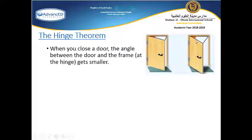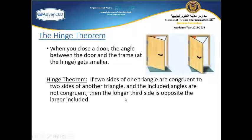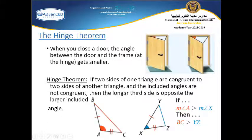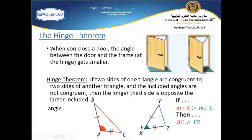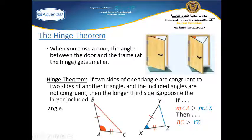Here we have the hinge theorem: if two sides of one triangle are congruent to two sides of another triangle — like side AC congruent to side XZ and side AB congruent to side XY — and the included angles are not congruent, then the longer third side BC is opposite to the larger included angle.